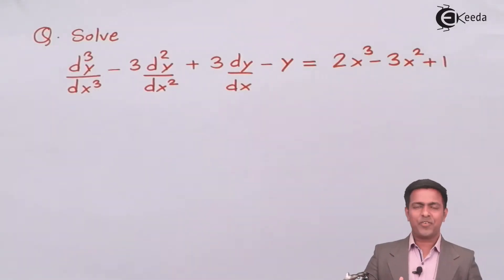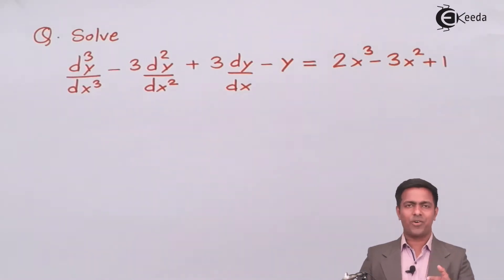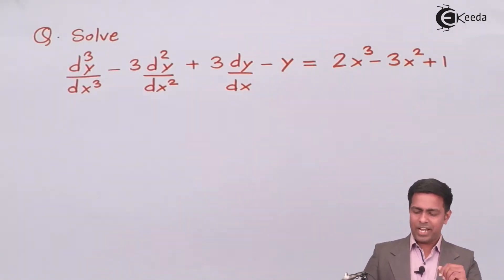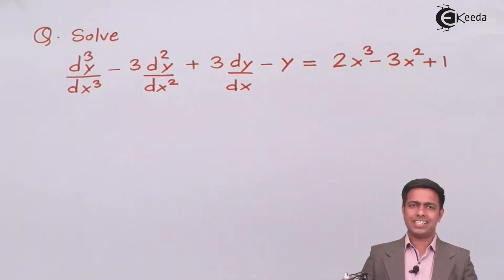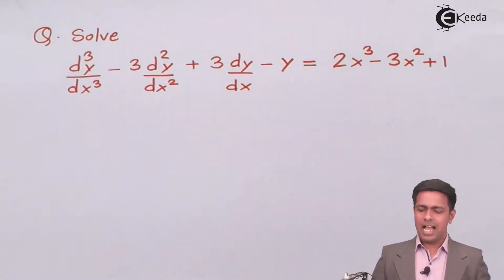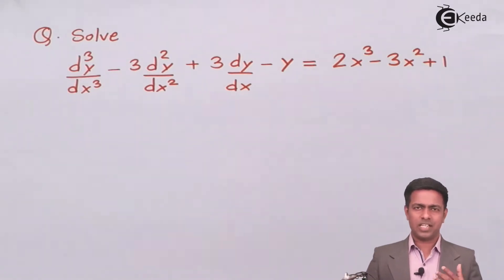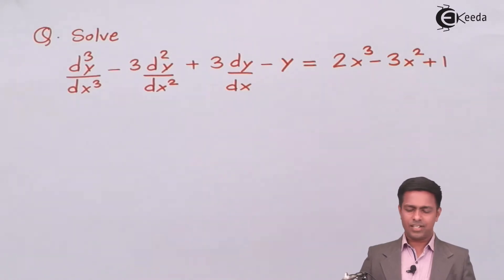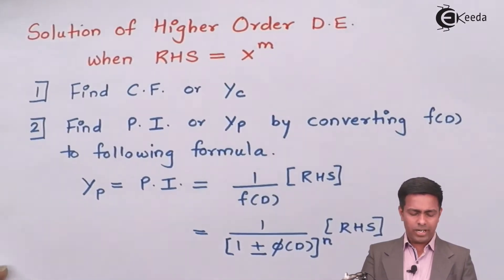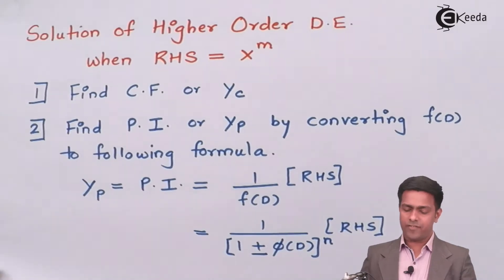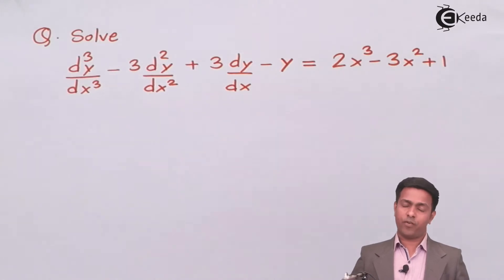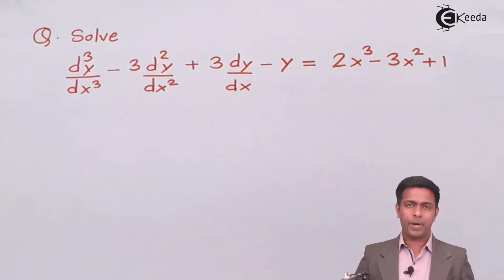Here we have the linear differential equation or higher order differential equation which we have to solve. If you see the right-hand side, that is the polynomial, and to solve that polynomial we have seen the steps. So I'm going to follow the steps to get the answer. Step number one says that first find out the complementary function. So let's find out the complementary function, and for that I will convert this equation in terms of the operator D.